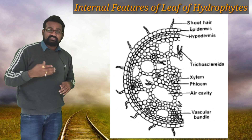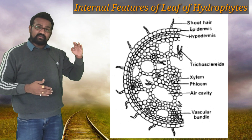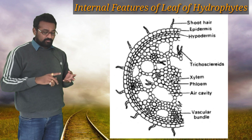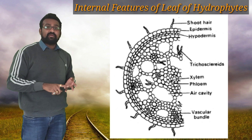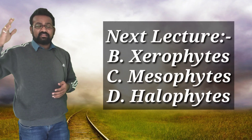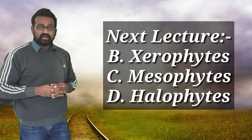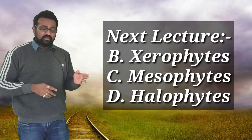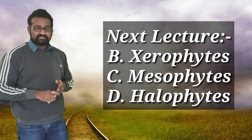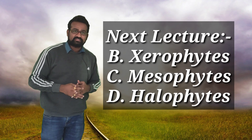We have discussed hydrophytes in detail — the four different types as well as the internal and external features of root, stem, and leaves. Stay tuned; in the next lecture we will discuss the remaining three parts of ecological grouping of plants. We have completed hydrophytes; halophytes, mesophytes, and xerophytes are remaining. We will meet in our next lecture. Thank you for your time, and don't forget to subscribe.